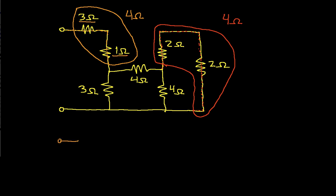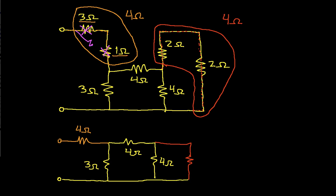We'll start by putting in the equivalent 4 ohm resistor that we found. And then this is still connected to this 3 ohm resistor, this 4 ohm resistor, and this 4 ohm resistor. But now I have this other 4 ohm resistor. So hopefully you can see what I've done here.